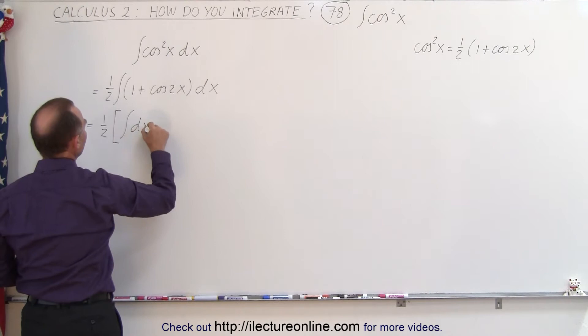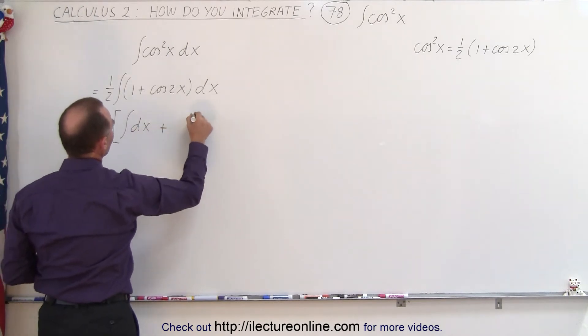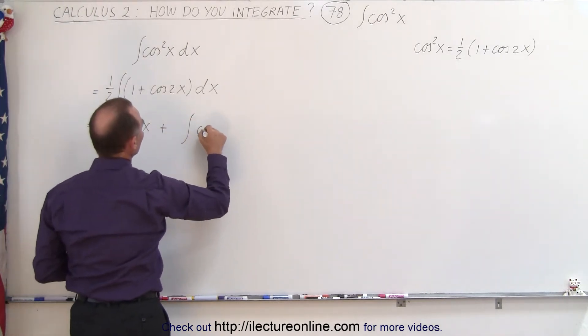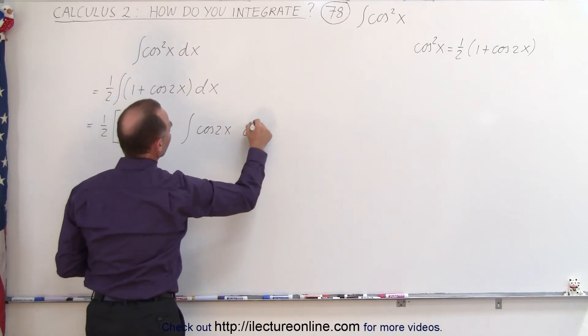the first integral will simply be dx, and the second integral will be the cosine of 2x times dx.